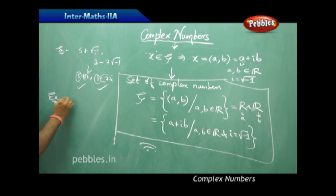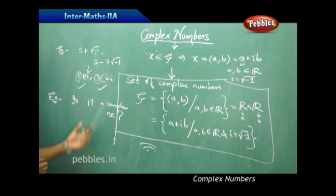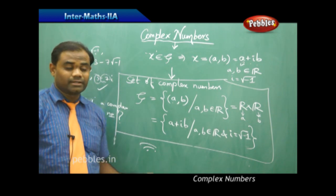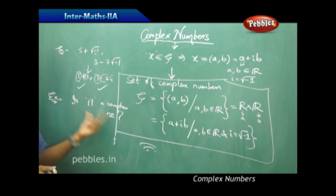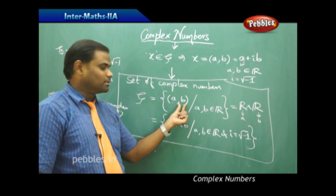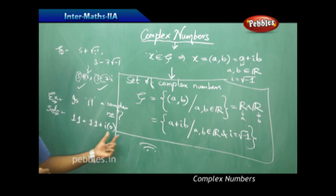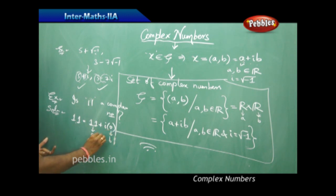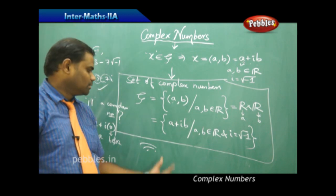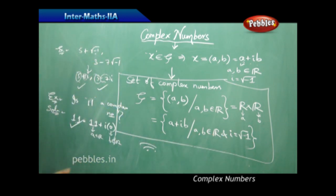Now the question is: is 11 a complex number? It is clearly an integer and hence a real number, but can it be represented in complex form? To write 11 as a + ib, we write it as 11 + i(0), since 11 + 0 = 11. Here a = 11 and b = 0, both real numbers. Therefore 11 is indeed a complex number in the form a + ib where i = √(−1).